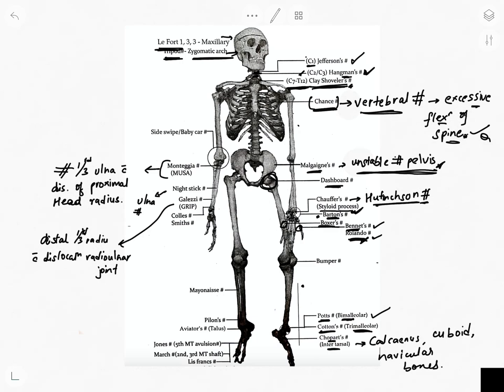Monteggia fracture is the fracture of the proximal one-third of the ulna with dislocation of the proximal head of the radius. Nightstick fracture is an isolated ulna fracture. Galeazzi fracture is the distal one-third radius fracture with dislocation of the radio-ulnar joint — both are very important.